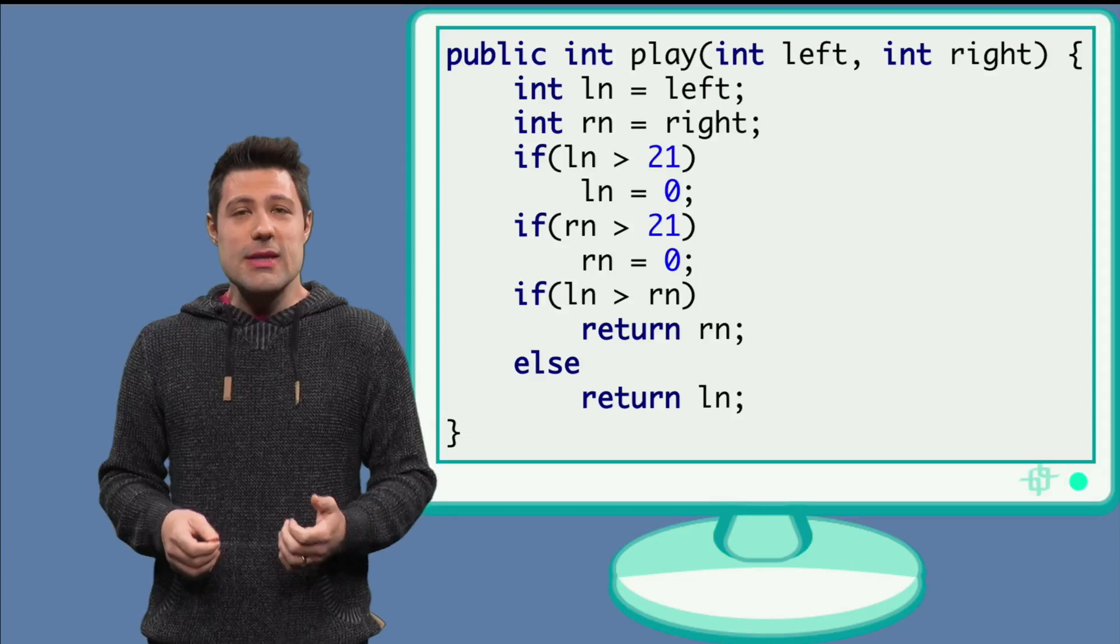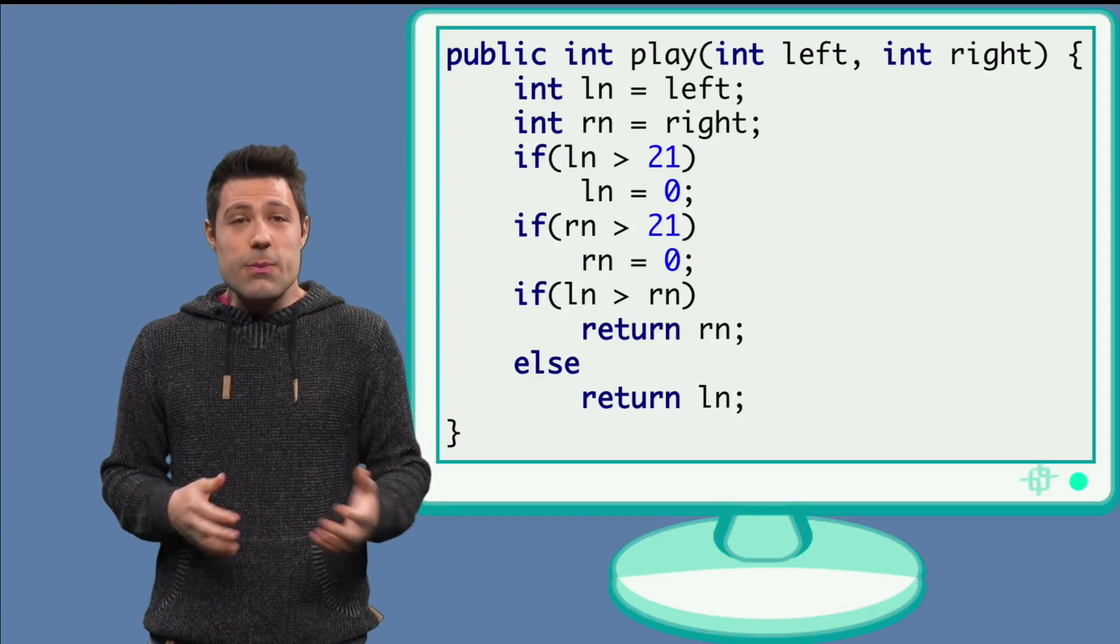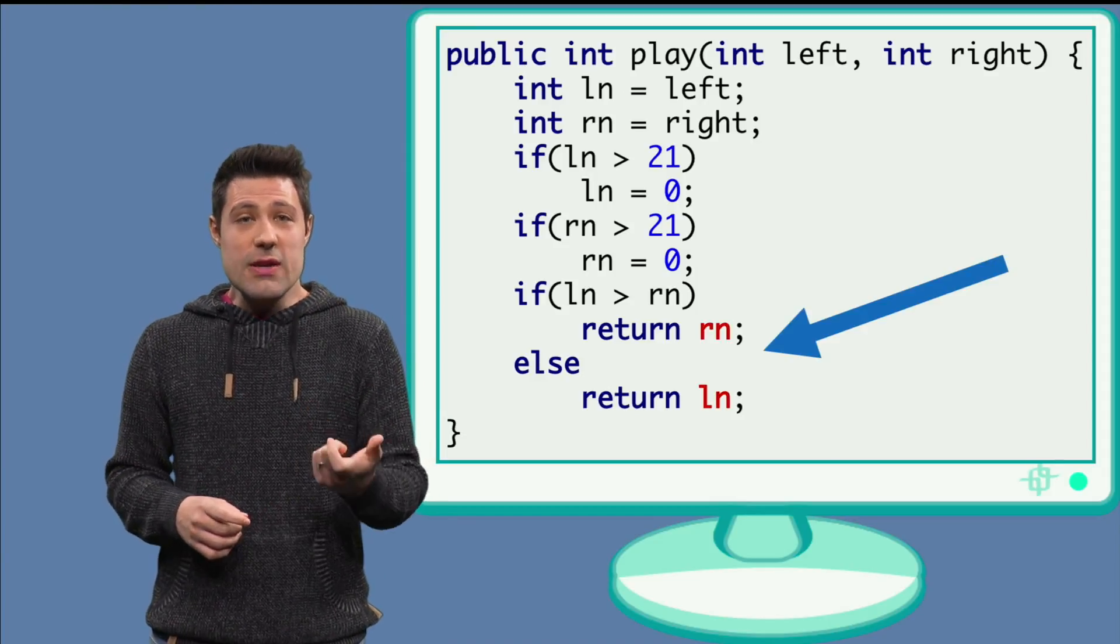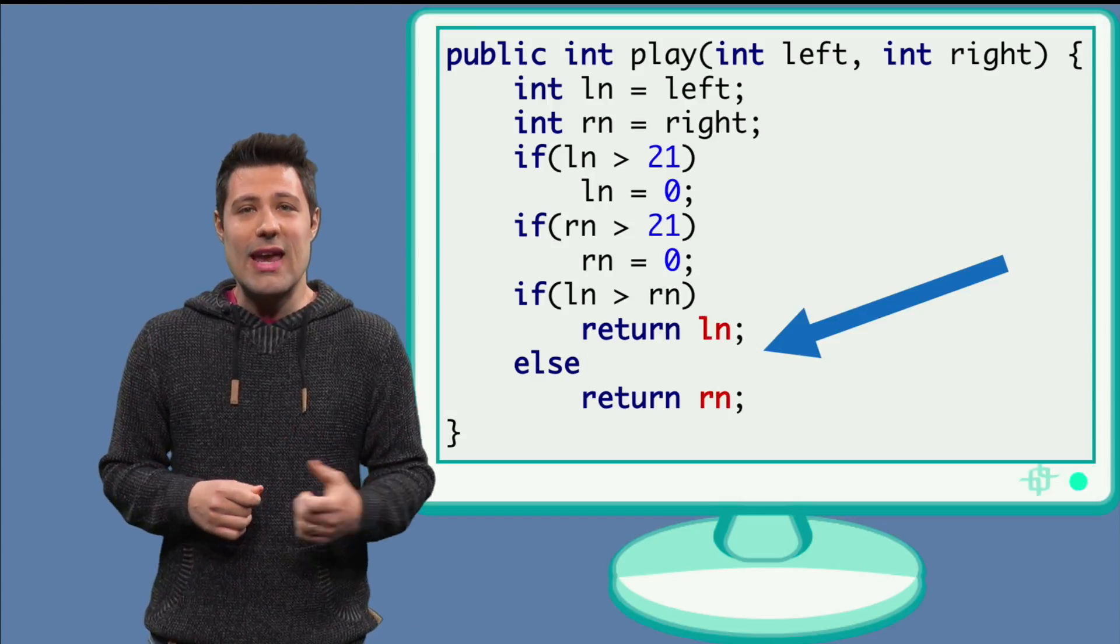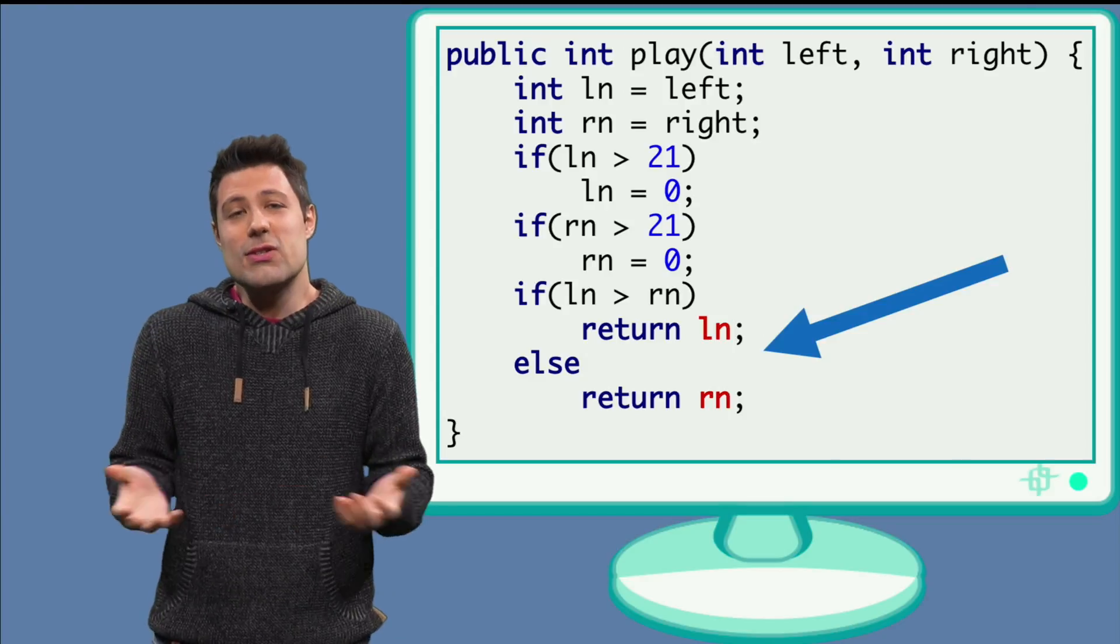If we go back to the implementation, we see that the developer changed the return variables. The first if, ln greater than rn, should be ln and not rn. That's an honest mistake.